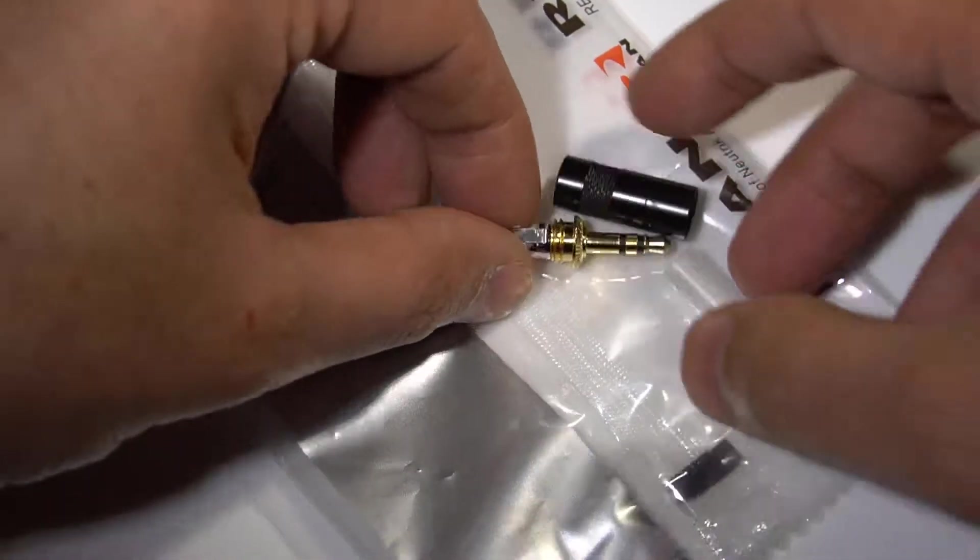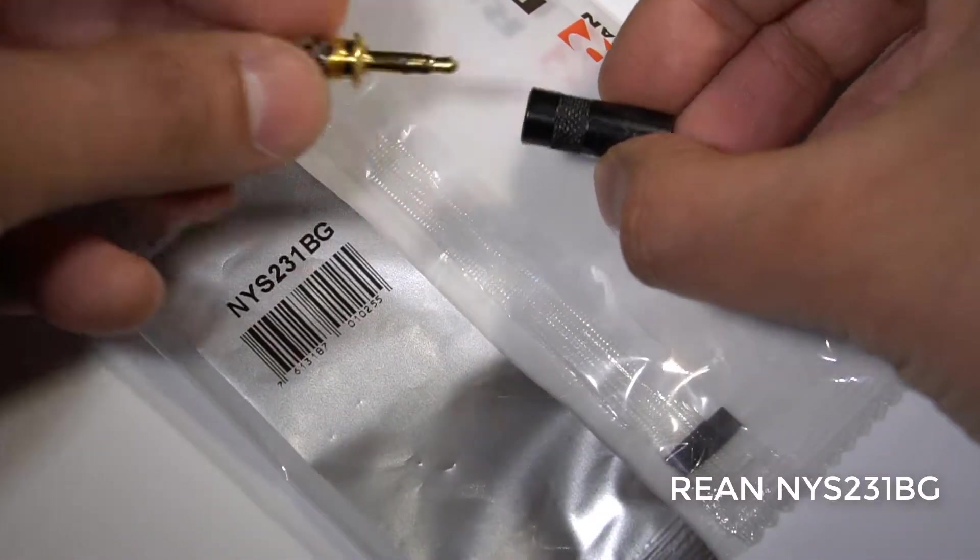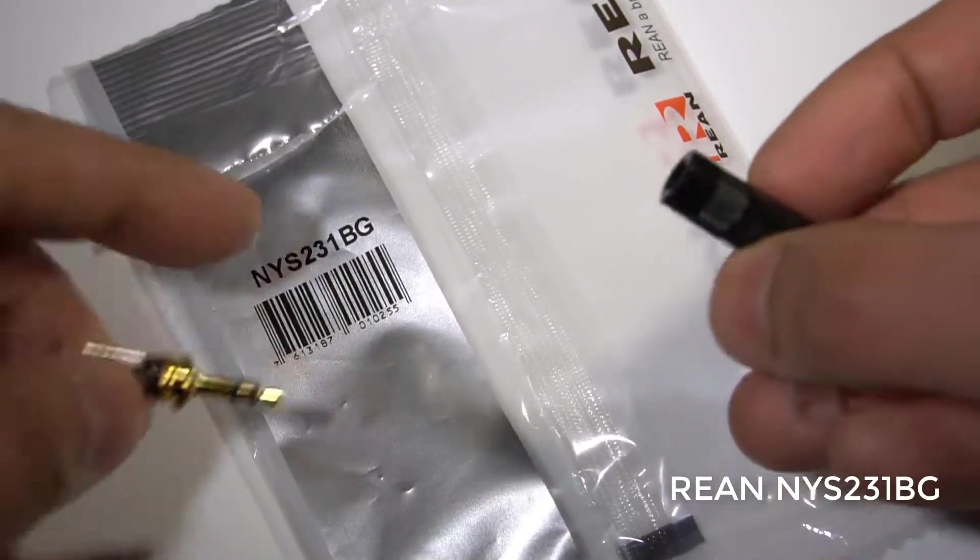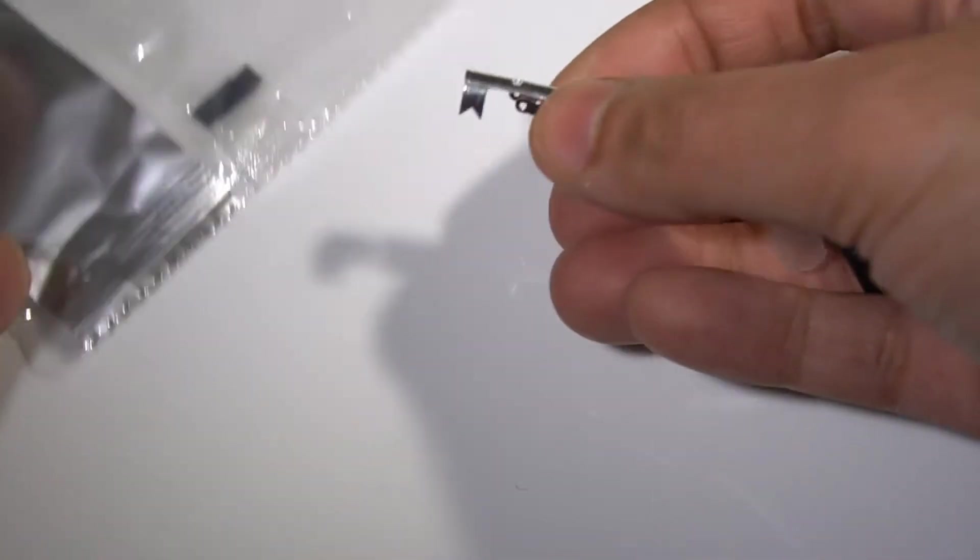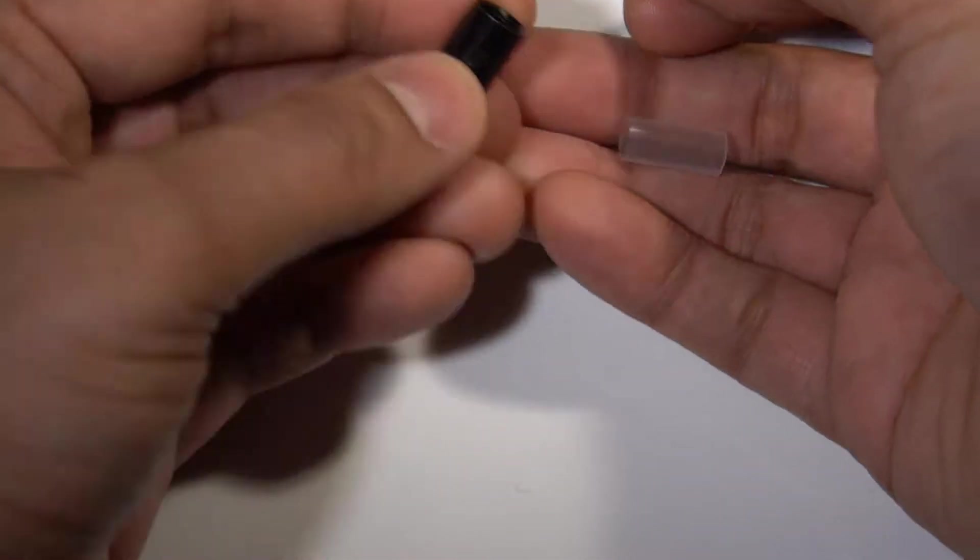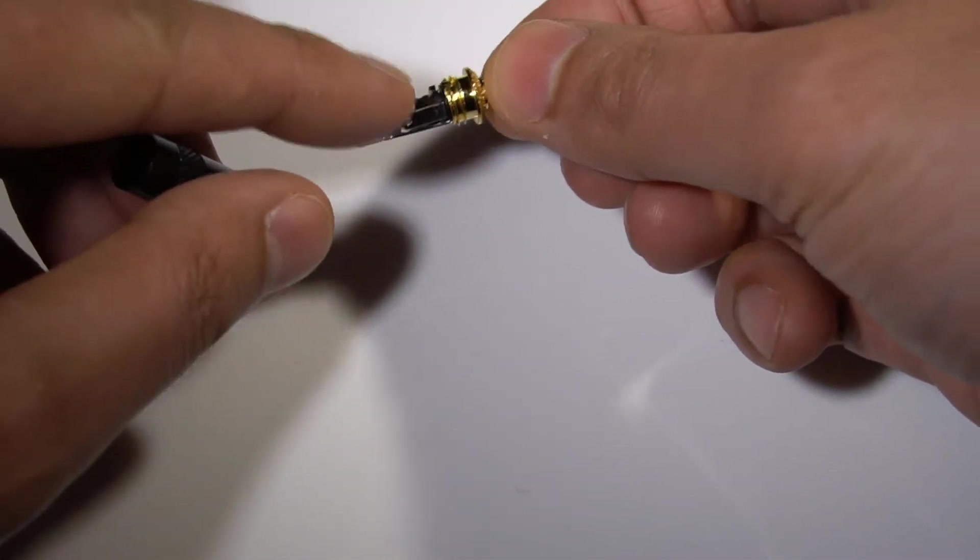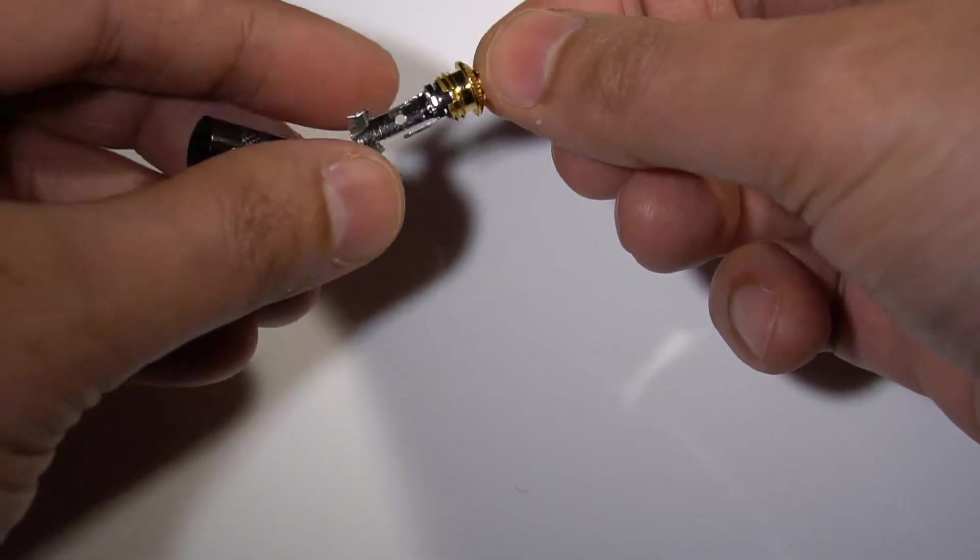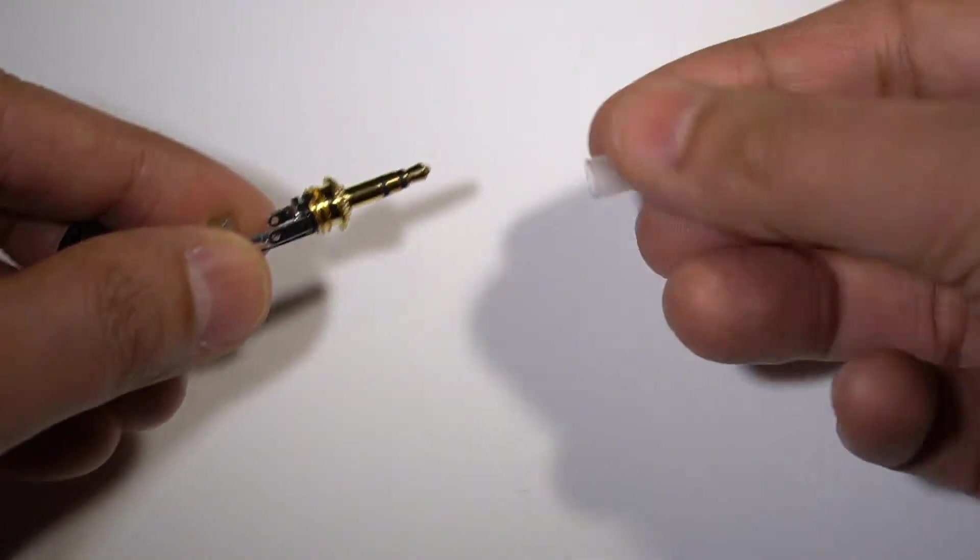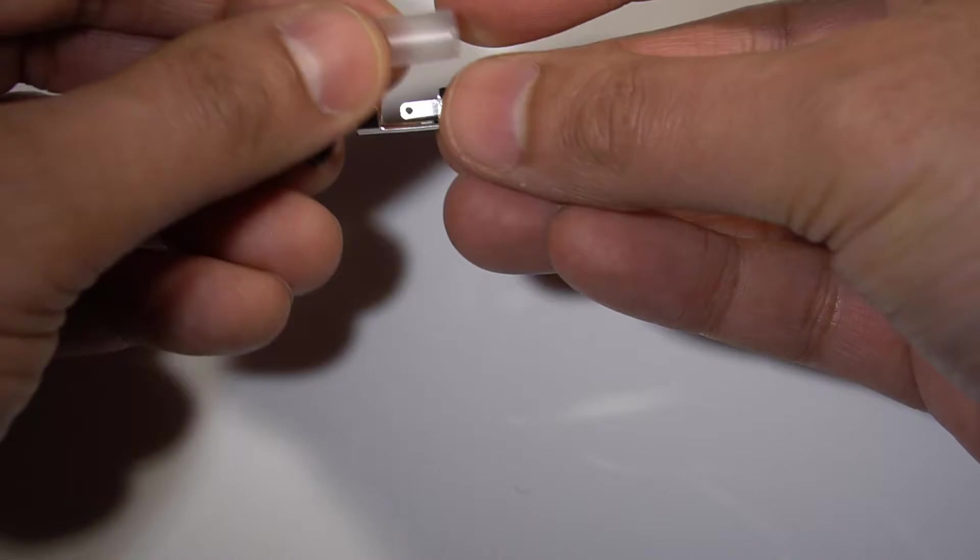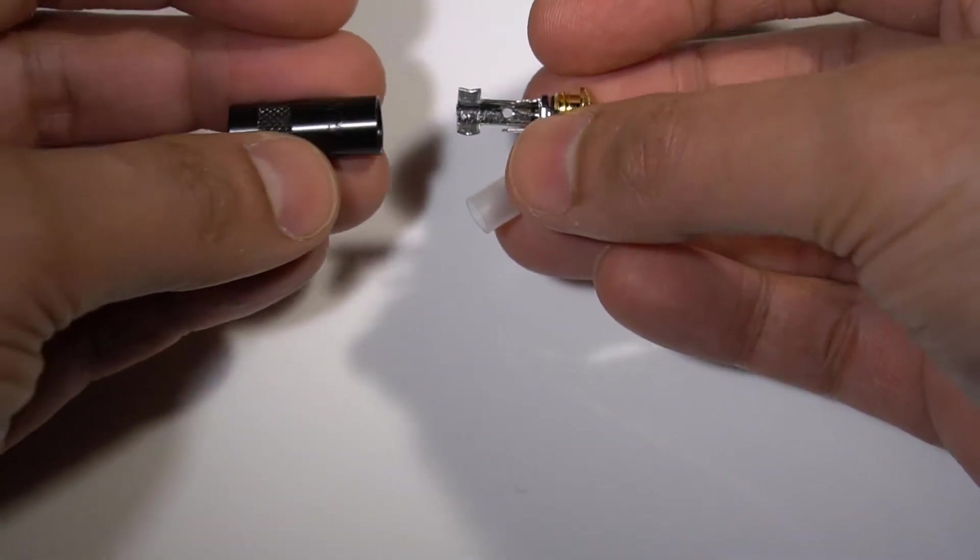This 3.5mm stereo jack plug is a Rean branded part, and it's quite a traditional design, really just a straight 3.5mm jack plug with the holes for soldering the wires. And it comes with this sleeve as well for protecting everything away from the metal sleeve.